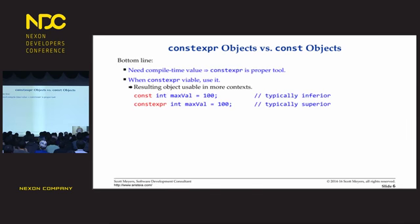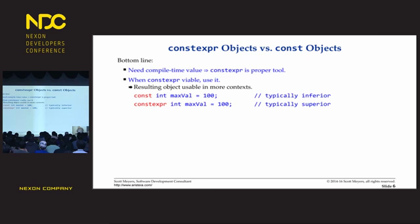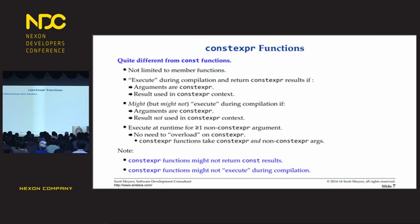If you need a compile-time value, constexpr is what you want. If you can use constexpr on an object, you should, simply because your value will be usable in more contexts. I could declare maxval to be const and that will compile, but it's not as good as declaring it constexpr, because constexpr lets you use it in more situations. However, that's only talking about objects, because the really interesting news is constexpr functions.